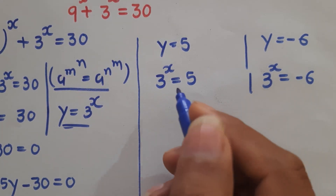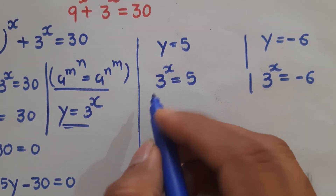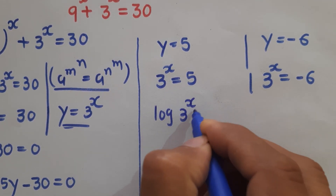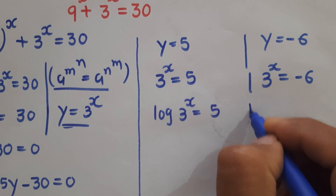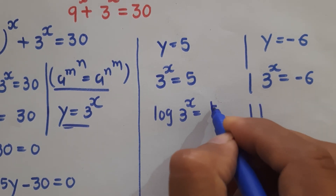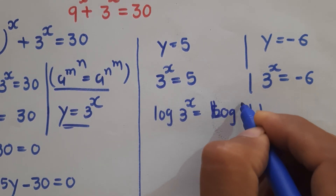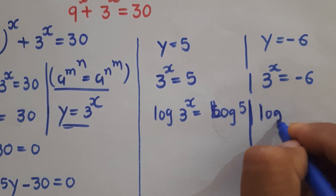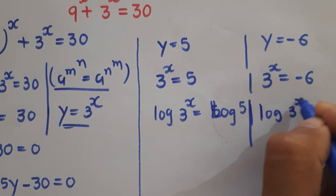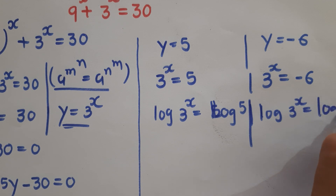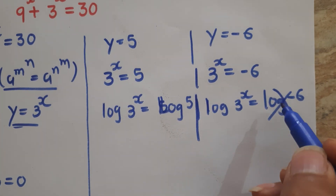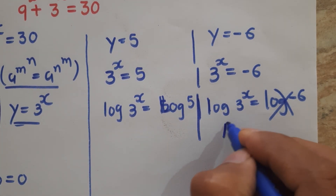We apply logarithm to both values. For 3 to the power x equals 5, we take log of both sides: log(3^x) equals log 5. For 3 to the power x equals minus 6, we cannot apply log to a negative value, so this solution is rejected.